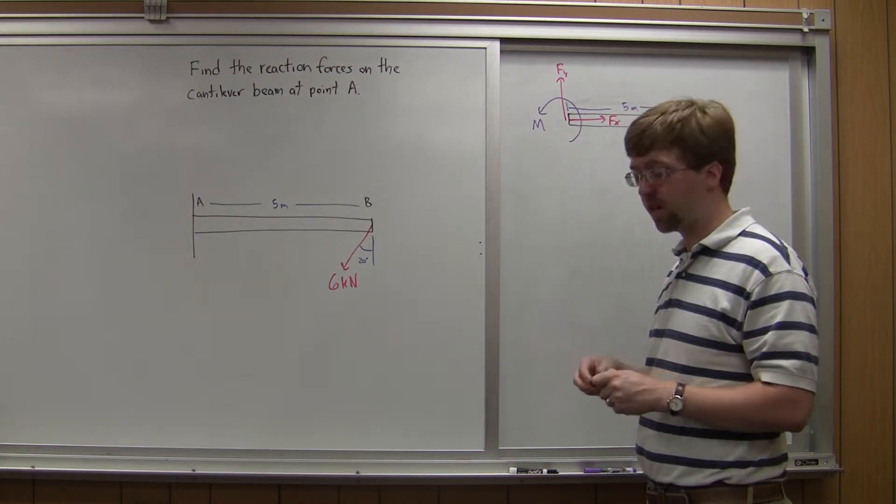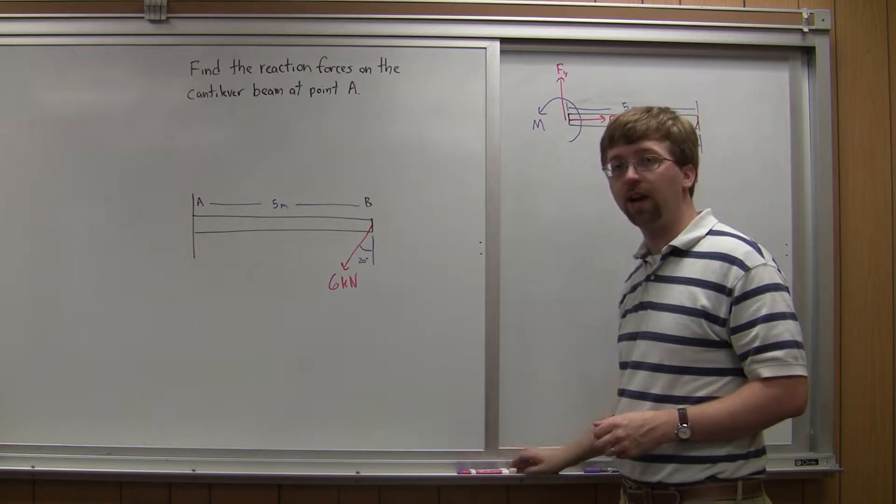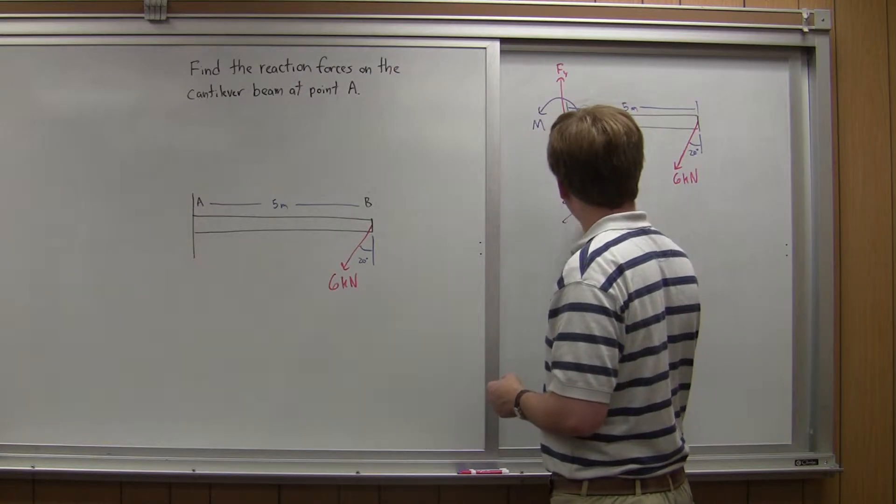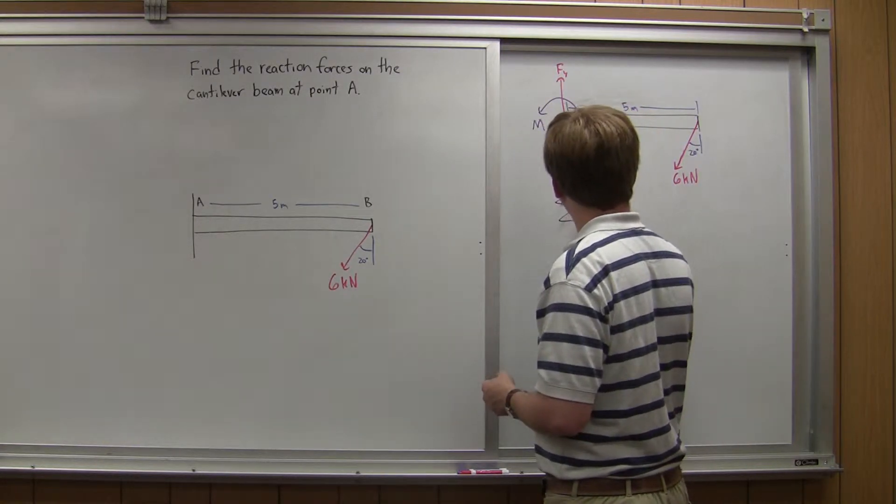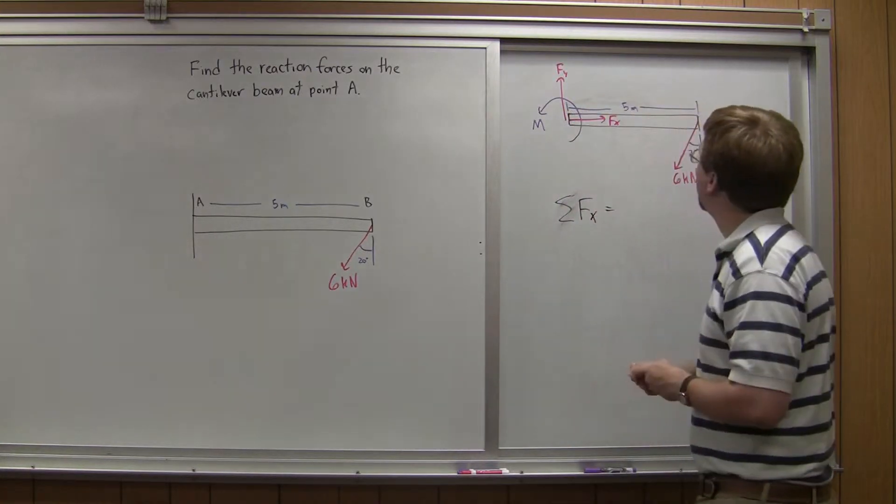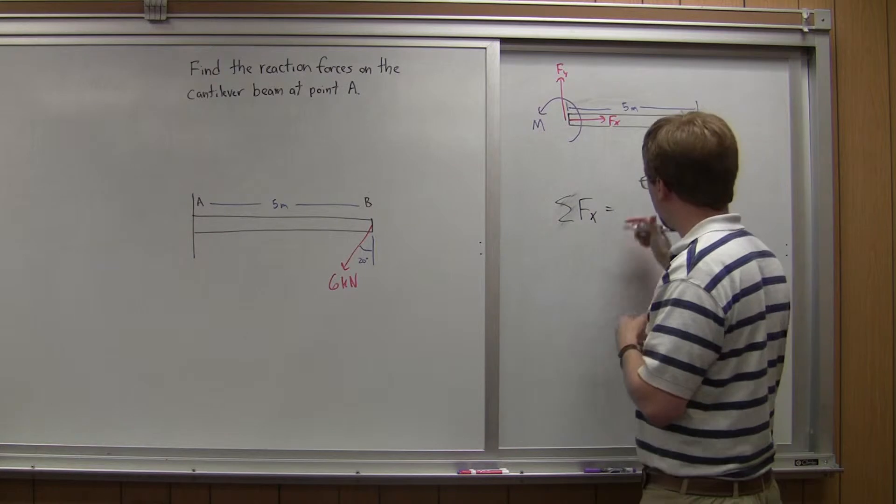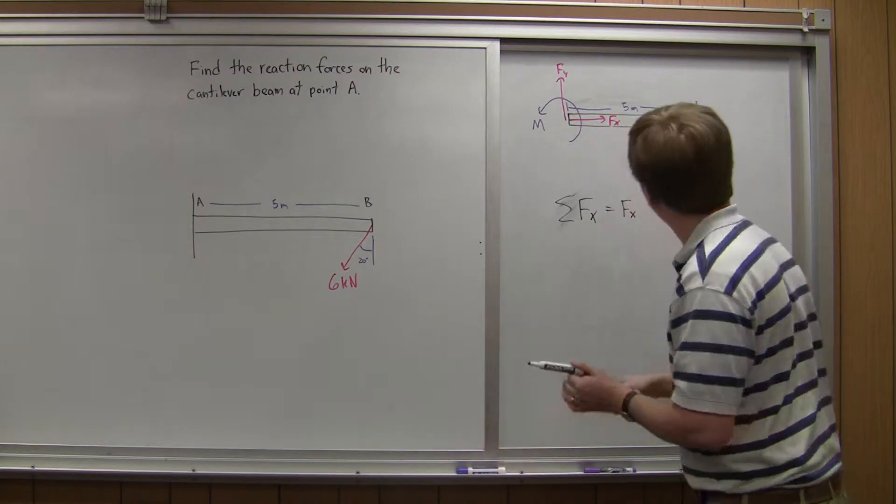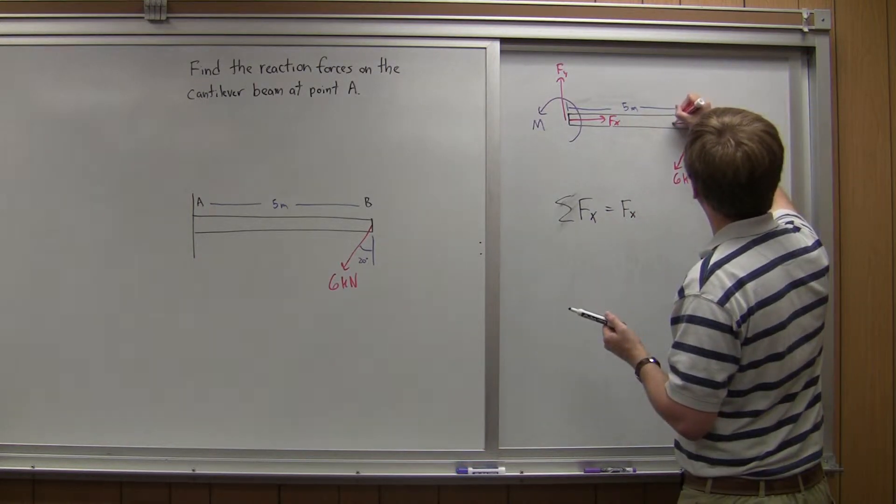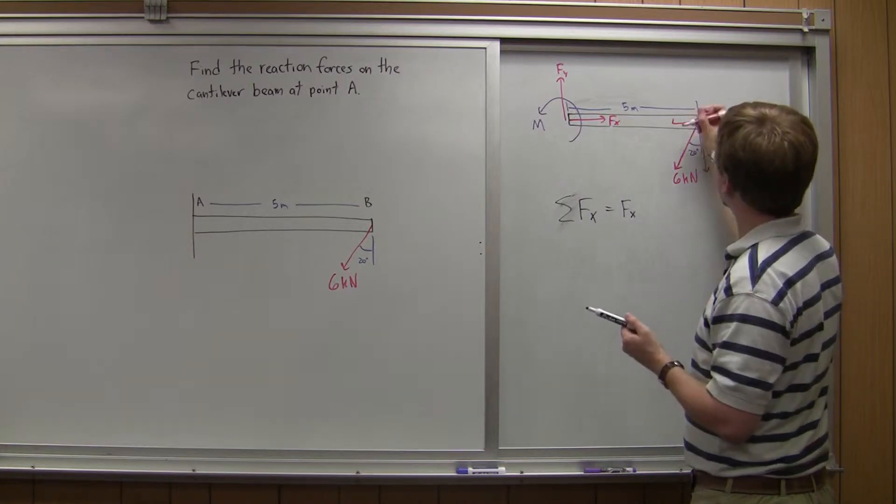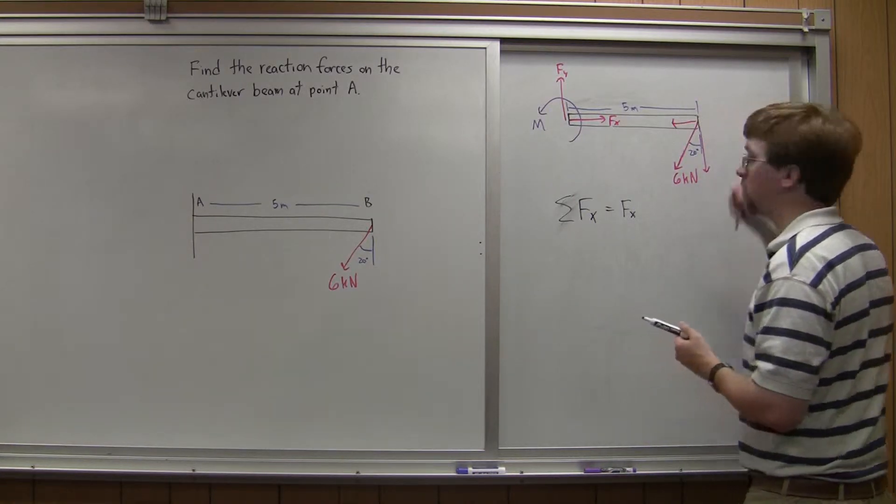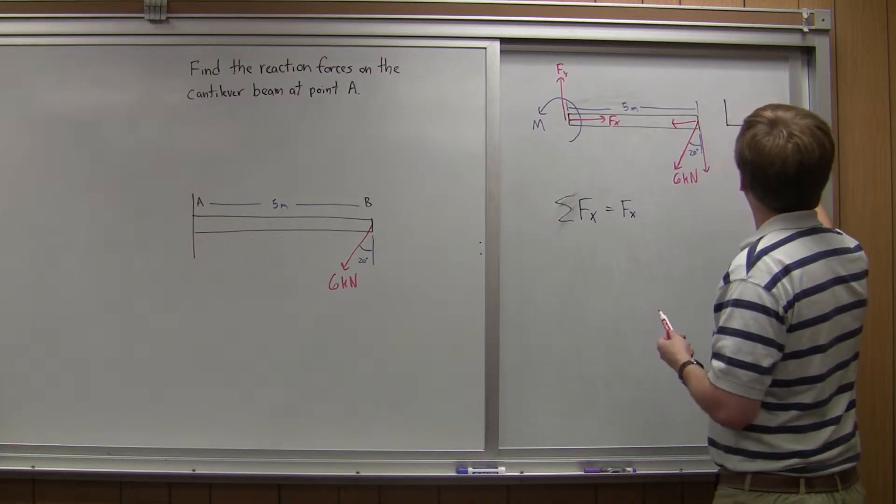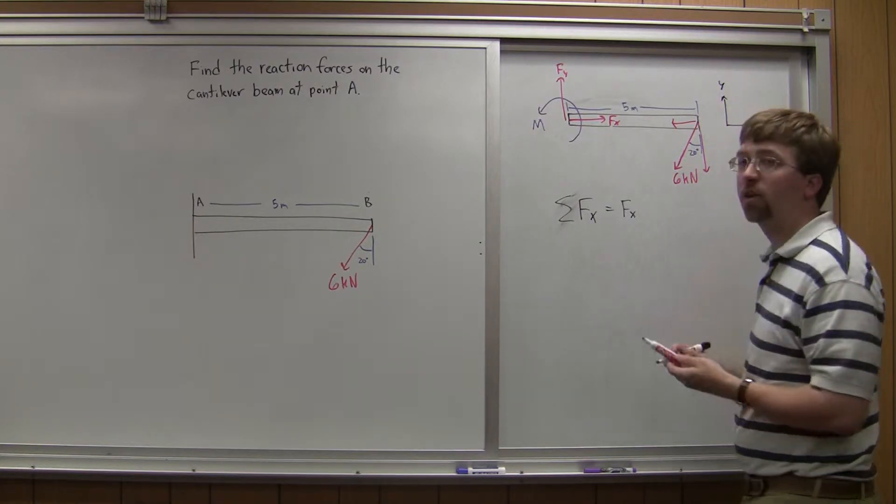Now I've got my free body diagram, I need to start drawing out the equations of equilibrium. I do this one at a time. First, I do sum of the forces in the x, and here I've got this Fx force that I drew in, and then I've got a component of this triangle over here. I'm using the traditional x and y coordinate system.